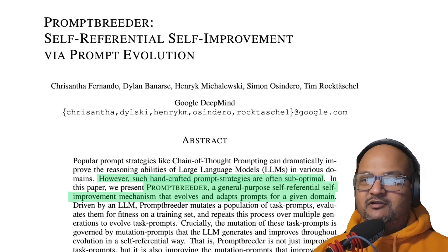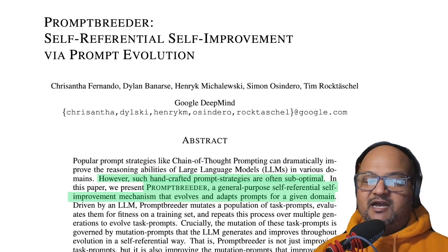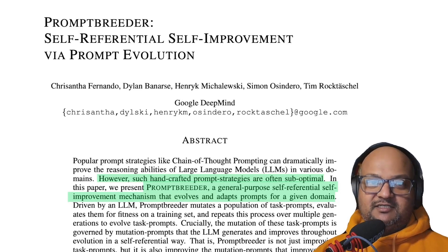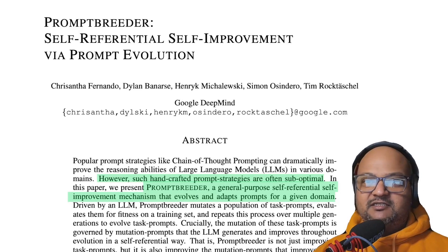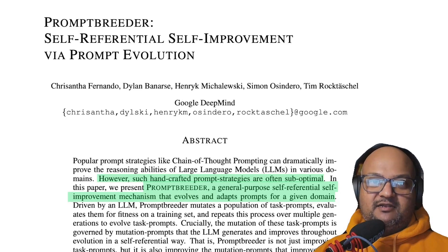Hi folks, welcome back. I hope you're all doing well. We've seen that the performance of large language models on particular tasks is very sensitive to the exact prompt. For example, chain of thought was a big leap forward, and it was somewhat surprising that simply asking the LLM to think through its reasoning step by step would result in such a huge leap in performance. But because the prompt is so important, people keep trying to find newer, better prompts. The problem with it is that it's largely a trial and error effort.